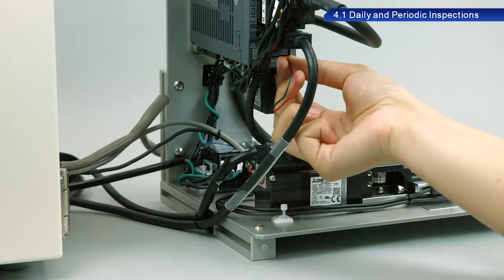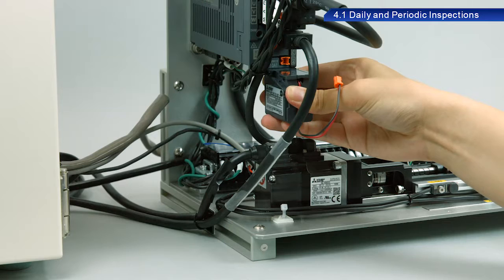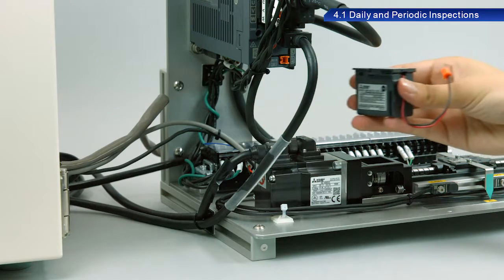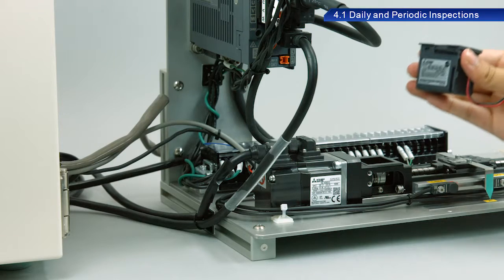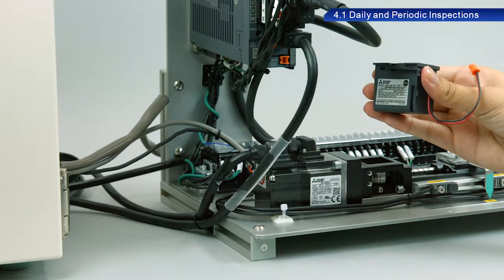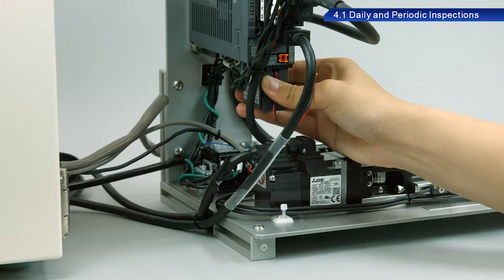Make sure that only the control circuit power supply is on when replacing batteries. The absolute position data will not be lost if you replace the battery while the control circuit power supply is on.